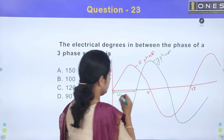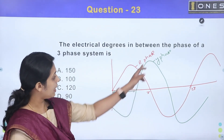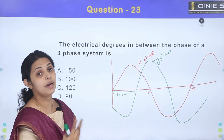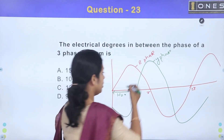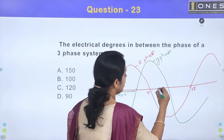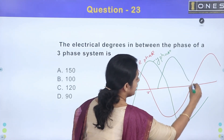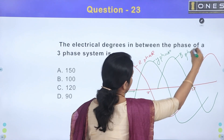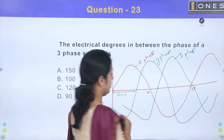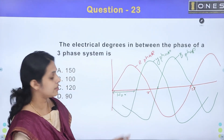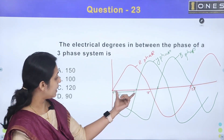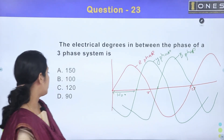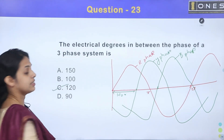From the Y-phase, there is another 120-degree phase shift to the B-phase. So we have 120-degree electrical phase shift between each phase. The answer is Option C: 120.